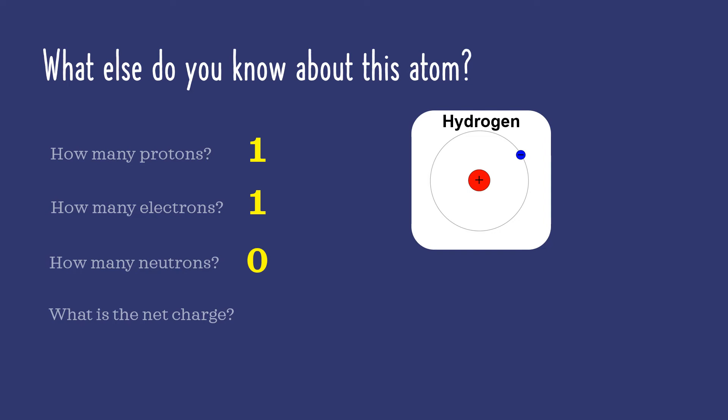Now, what do you suppose is the net charge of this atom? Remember that protons have a positive charge and electrons have a negative charge. Since there's one of each, they cancel out. And the charge on this hydrogen atom is zero. That's called neutral.